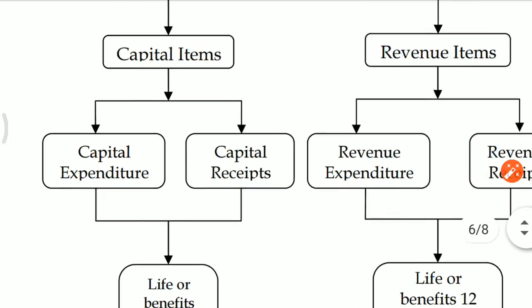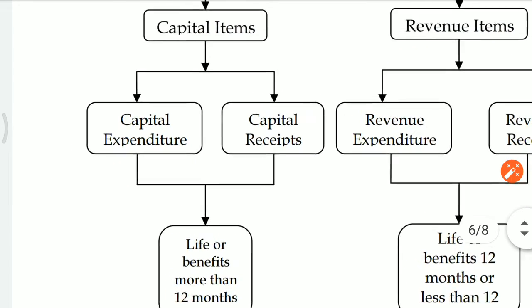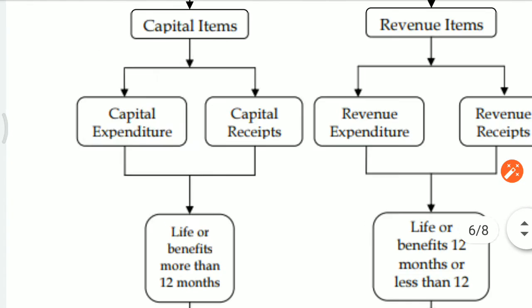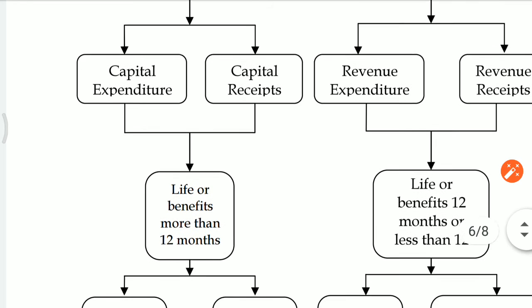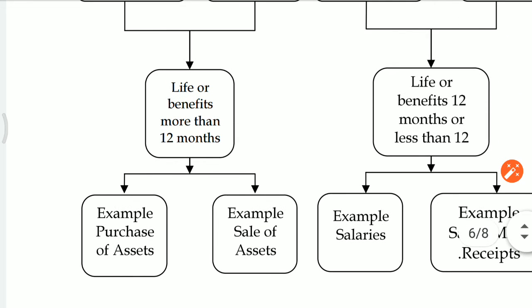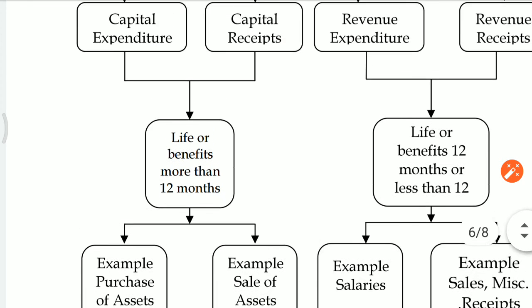First is Capital Item, which has two types: capital expenditure and capital receipt. Capital items have a life or benefit of more than 12 months. If the life or benefit is more than 12 months, it will be considered capital expenditure. For example, purchase of assets is capital expenditure. When you sell any asset, it will be considered a capital receipt.